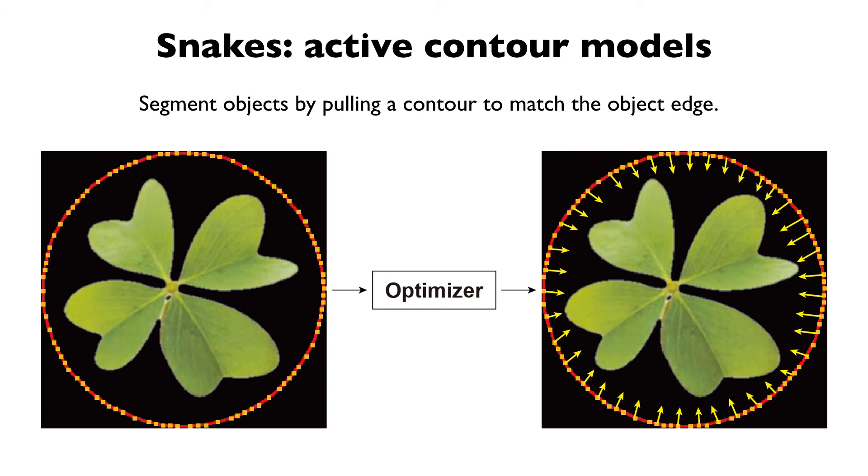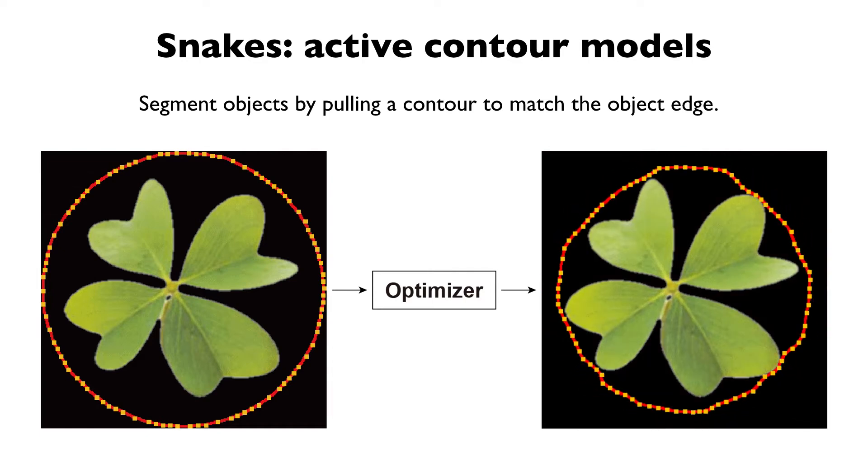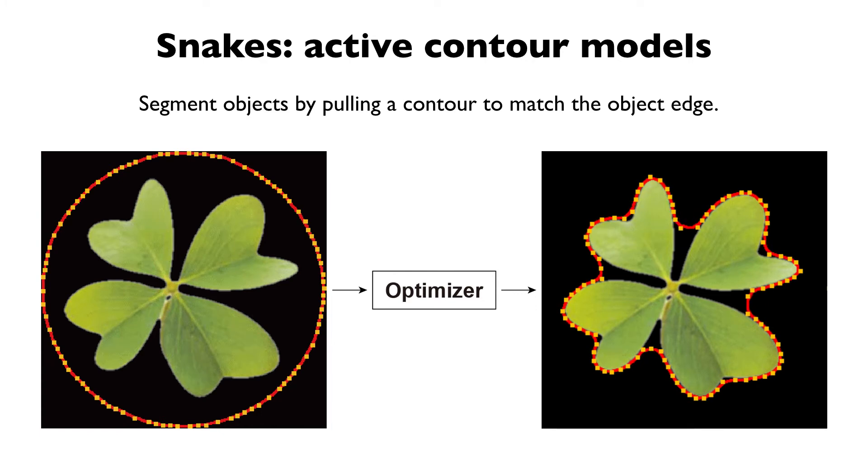Such a contour-based representation has long been used by active contour models in image segmentation. Given an initial contour, traditional snake algorithms treat the coordinates of the vertices as a set of variables and optimize an energy functional with respect to these variables. These methods iteratively deform an initial contour to match the object boundary. Because their objective functions are handcrafted and typically non-convex, they are prone to local optima when the background is cluttered.